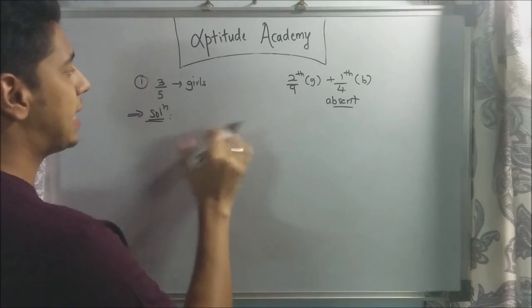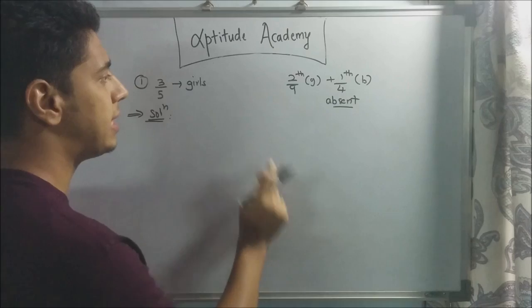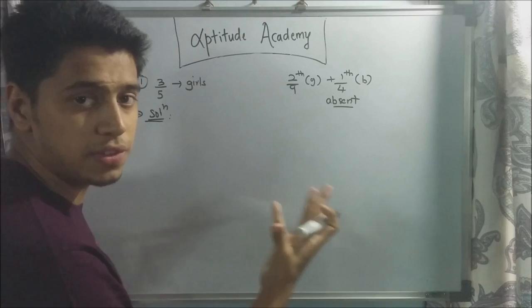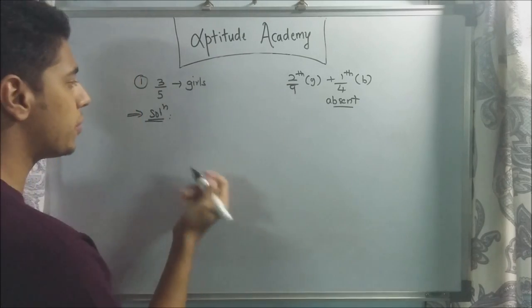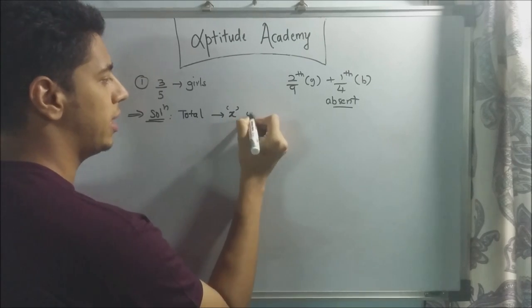For the first problem, they have said that in a class, 3/5 of the class are girls and 2/9 of the girls and 1/4 of the boys are absent. What is the total number of students that is present? What we have to do is, let us assign the total of the class as x children.